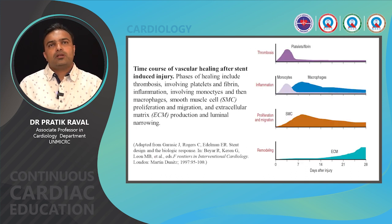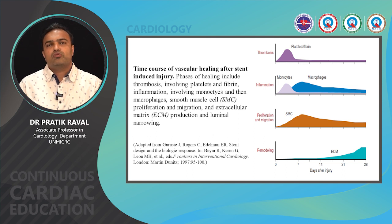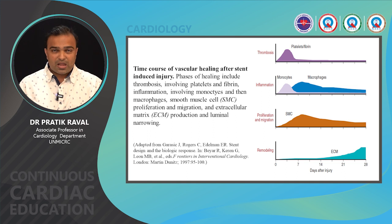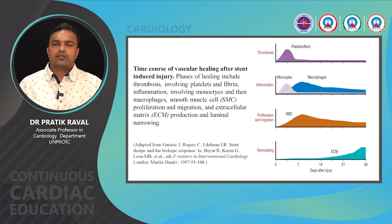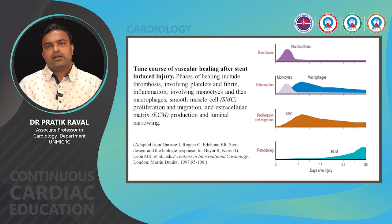After stent implantation, trauma at the implantation site triggers vascular healing. In the initial days, the stent site is infiltrated by platelets and fibrin, followed by monocyte-macrophage infiltration and smooth muscle cell migration from media into the intima with subsequent proliferation. Some smooth muscle cells transform into myofibroblasts and lay down extracellular matrix including collagen and fibronectin. If extensive, this matrix can cause late luminal loss, restenosis, and stent thrombosis.